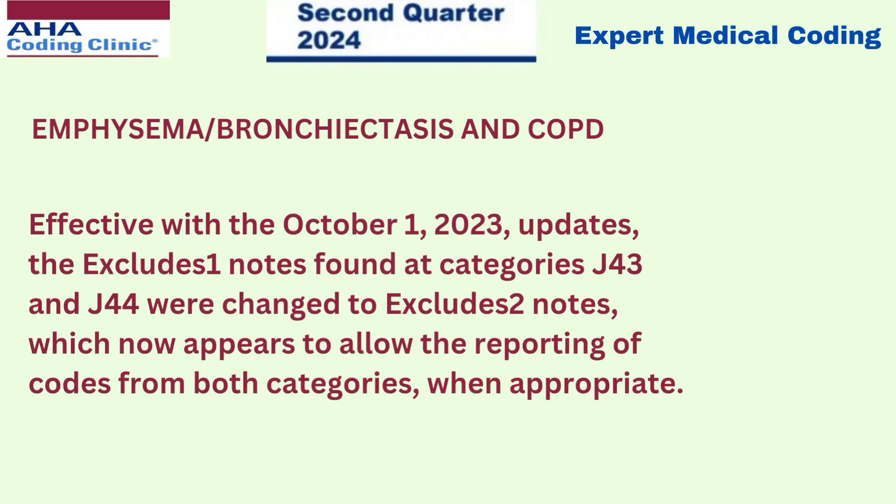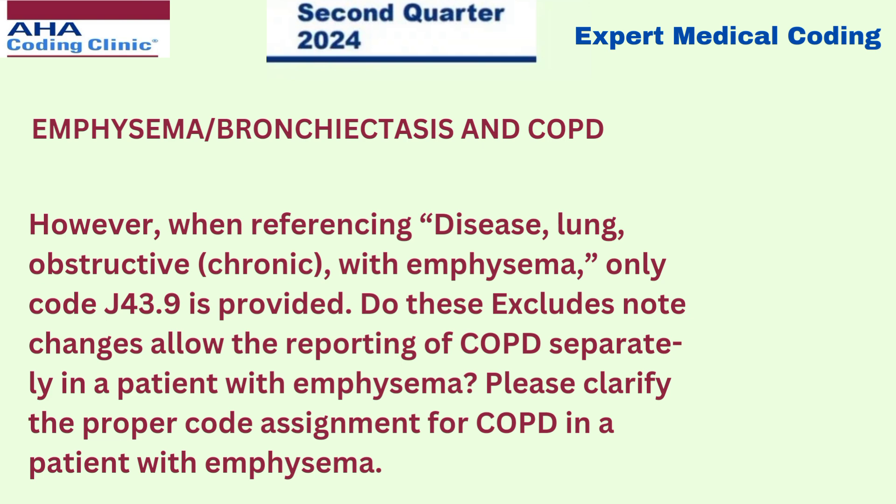Effective with the October 1st 2023 updates, the excludes one notes found at categories J43 and J44 were changed to excludes two notes, which now appears to allow the reporting of codes from both categories when appropriate. However, when referencing disease, lung, obstructive, chronic with emphysema in the index, only code J43.9 is provided. The question is: do these excludes note changes allow the reporting of COPD separately in a patient with emphysema? Please clarify the proper code assignment for COPD in a patient with emphysema.